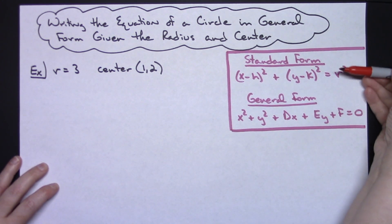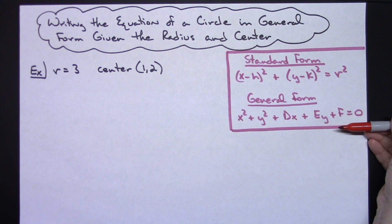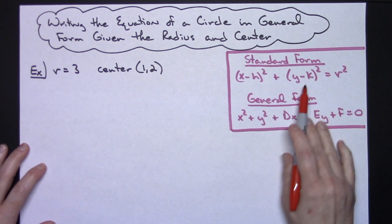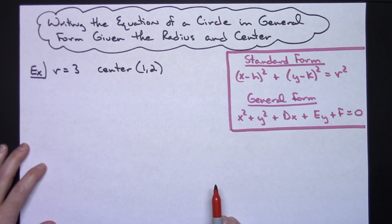To do this you're going to need to remember the two forms of a circle. We've got the standard form of a circle with that center being at hk and then you've got the general form of a circle.